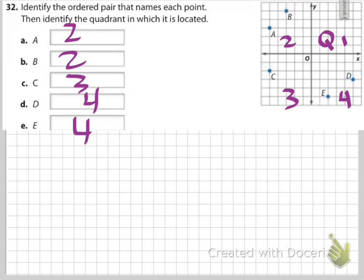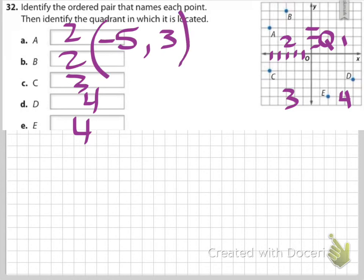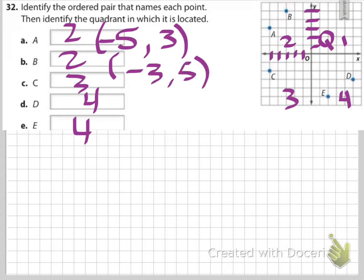It also asks for the ordered pairs. A is at negative 5 comma negative 3. B is at negative 3 comma positive 5. C is at negative 5 comma negative 2. D is positive 5 comma negative 3.